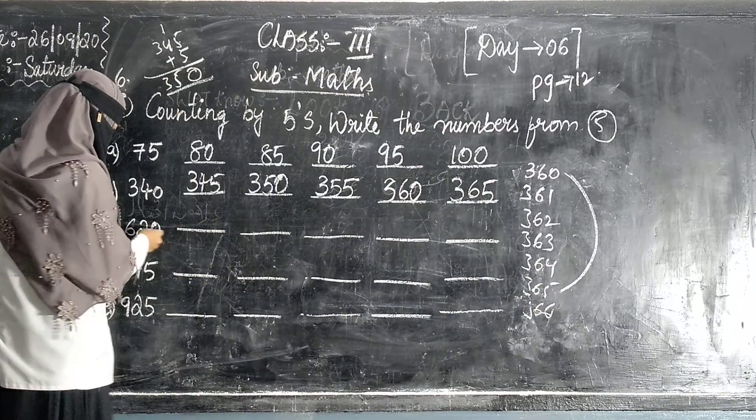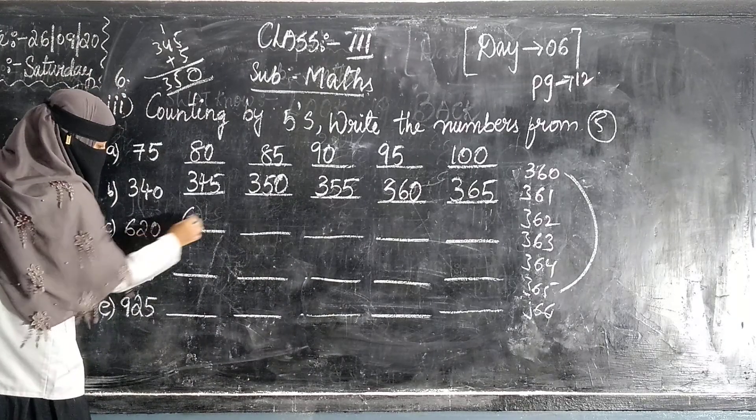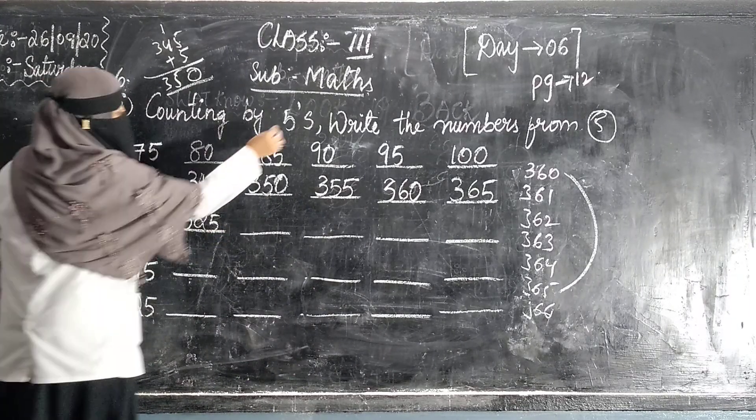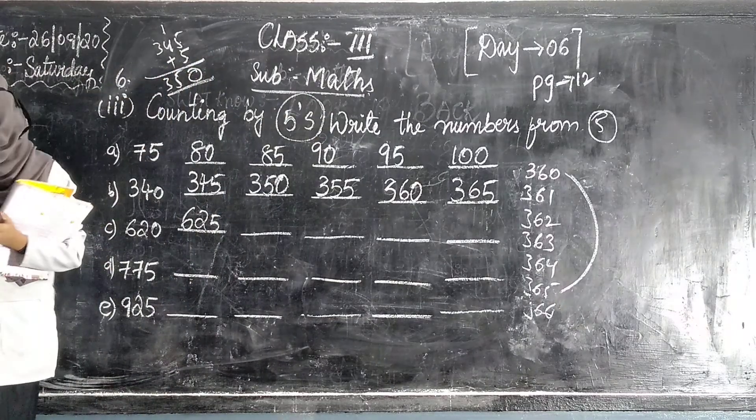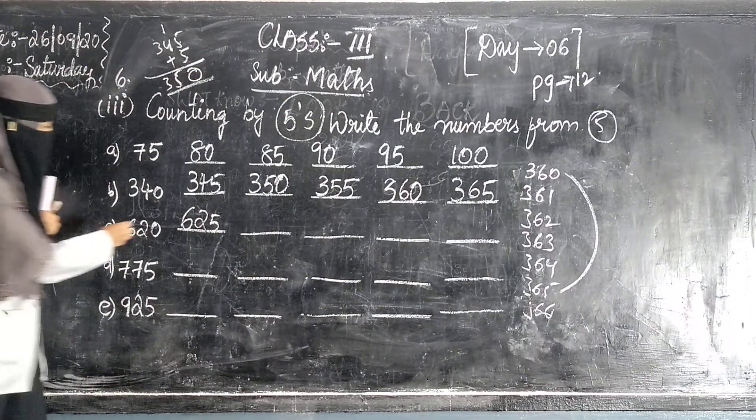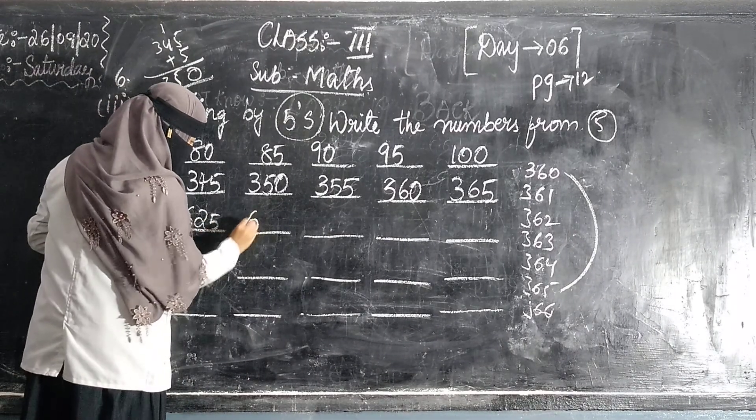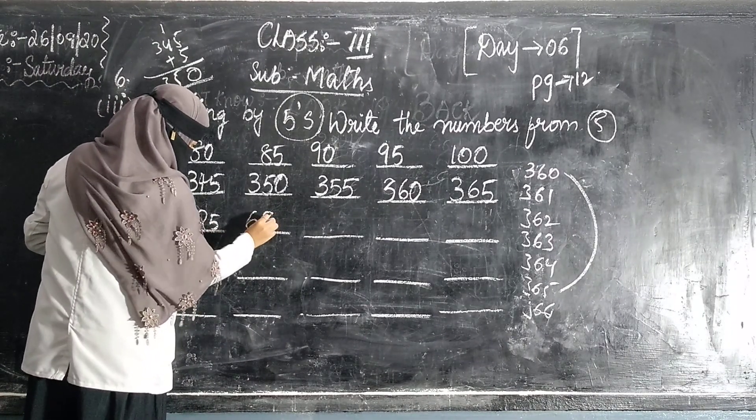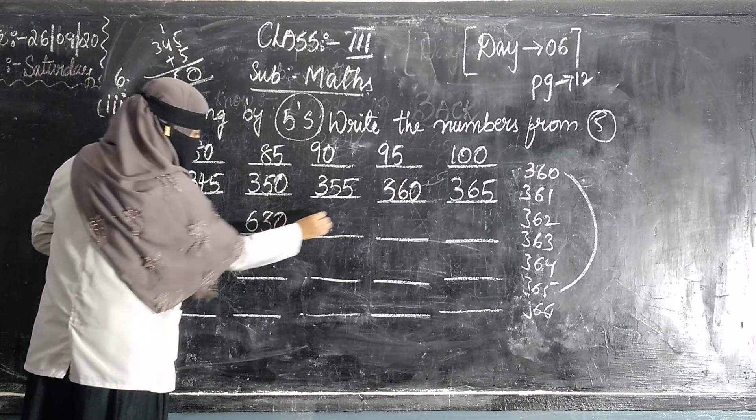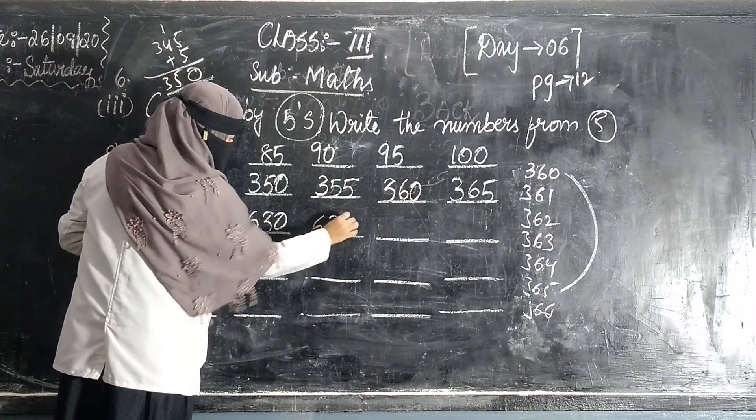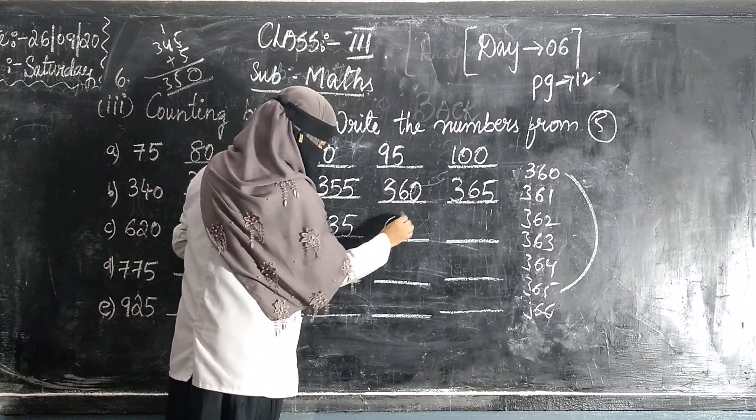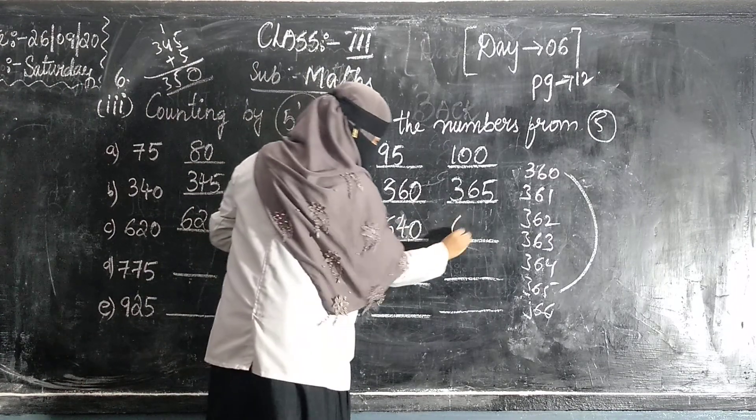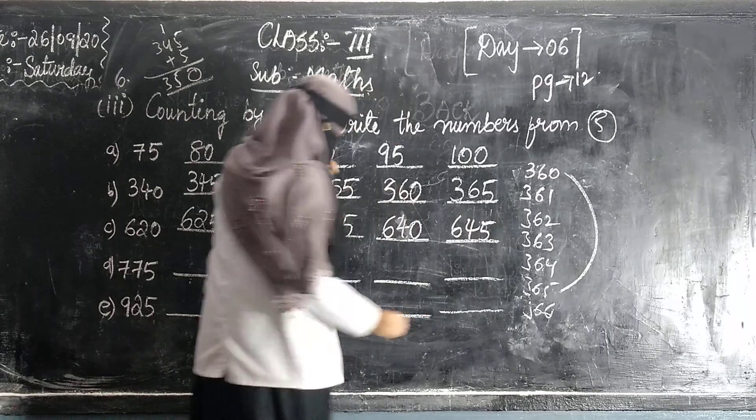You have to add 5. 620. So 620, because counting by 5. So 5 is added. 625 add 630. Again add 5, 635. Again add 5, that is 640, 645.